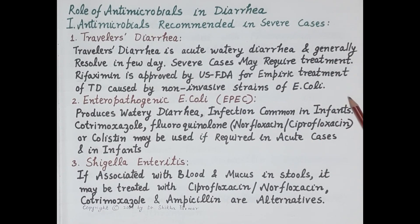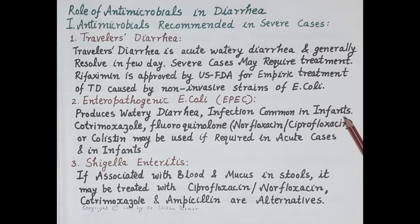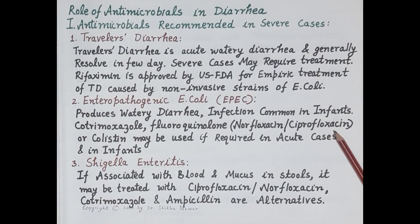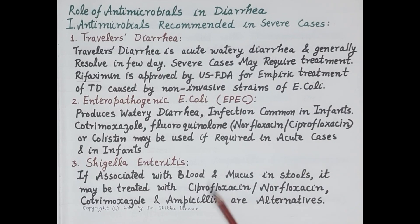Second is diarrhea caused by enteropathogenic E. coli, which is also self-limiting and produces watery diarrhea. Infection is common in infants. Cotrimoxazole, then fluoroquinolones such as norfloxacin or ciprofloxacin, or colistin may be used if required in acute cases and also in infants.